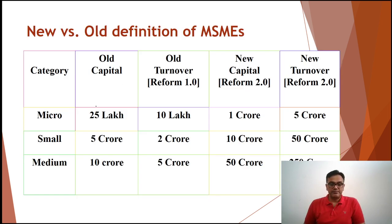In the old definition, for micro enterprises the top end was Rs. 25 lakh in case of manufacturing and Rs. 10 lakh in case of services. For small enterprises the top end was Rs. 5 crore in case of manufacturing and Rs. 2 crore in case of services. For medium enterprises the upper limit was Rs. 10 crore in case of manufacturing and Rs. 5 crore in case of services.